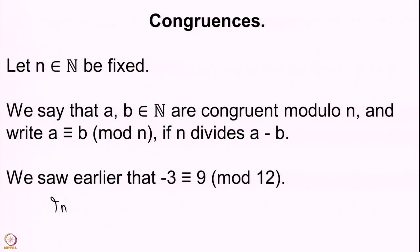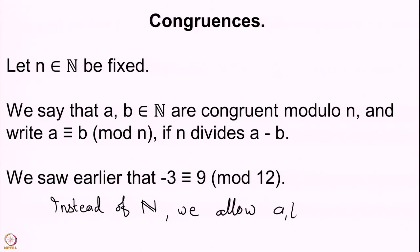This is a very valid question and it can be resolved in two ways. Number one is that instead of natural numbers, we allow a and b to come from Z. This is one way to resolve the difficulty: we have a definition for pairs a, b from natural numbers and we extend this definition to pairs coming from integers. Indeed, we remarked also earlier that the difference a minus b can be negative, so when we say n divides a minus b the division may actually happen in Z.